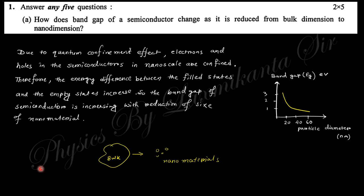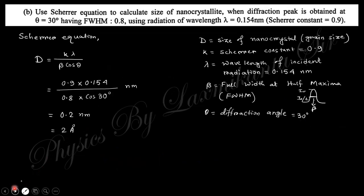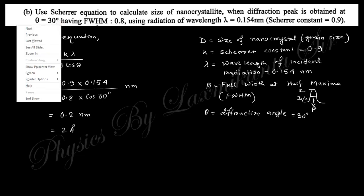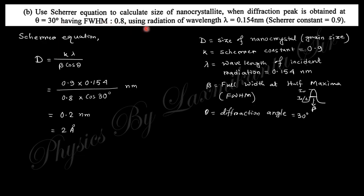Next question: Use Scherrer equation to calculate the nanocrystallinity when diffraction peak is obtained at theta equals 30 degrees, having FWHM of 0.8, using radiation of wavelength 0.154 nanometer, where the Scherrer constant is 0.9. This is the Scherrer equation: grain size D equals k lambda divided by beta cos theta.